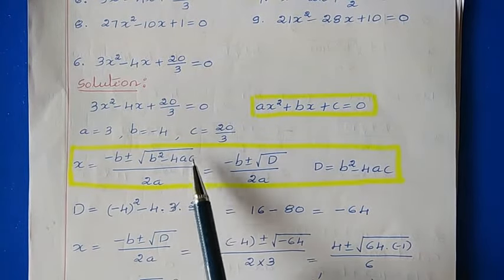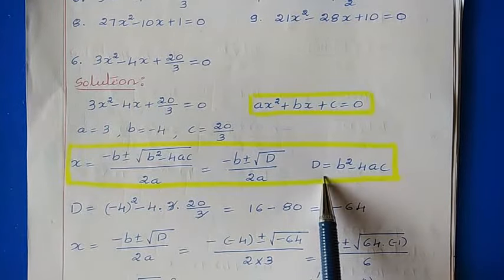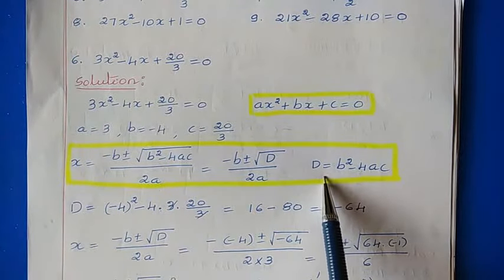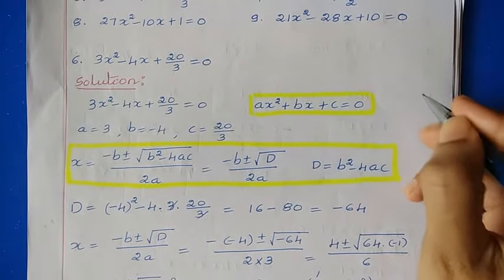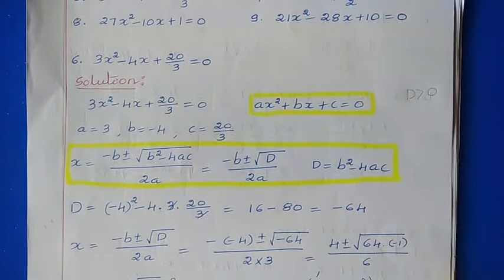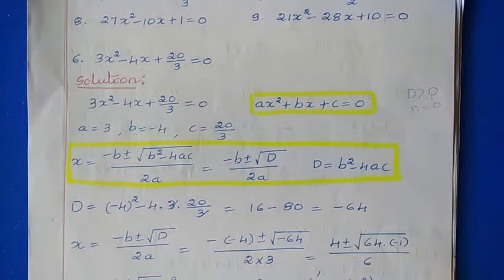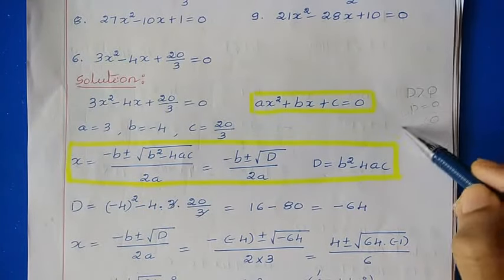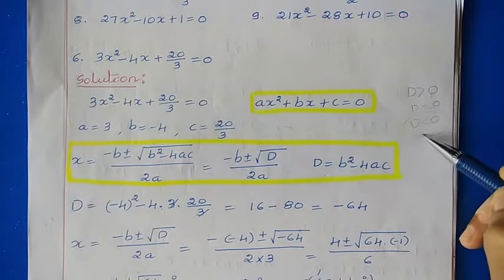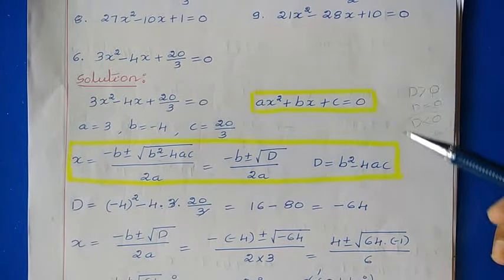Here, b² - 4ac is known as the discriminant. Based on the discriminant value, the nature of the roots can be decided. If the discriminant is greater than 0, roots are real and distinct; if equal to 0, roots are real and equal; and if less than 0, roots are imaginary. In these problems we are going to discuss the case where discriminant is less than 0, as we are referring to complex numbers.